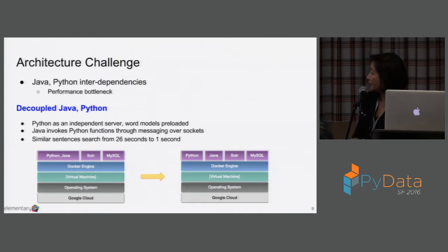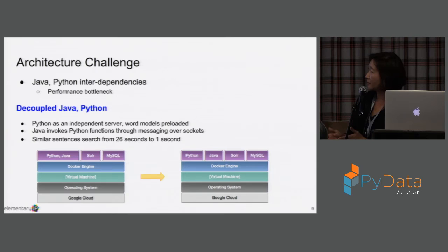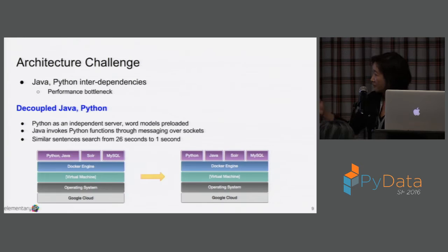What we ended up doing is breaking Python and Java apart — decoupling them. Instead of having Java call Python, which required loading Python and the word model into memory each time, we now run Python as an independent server. Python starts up with the word model already in memory and it's up and ready to go. Whenever Java needs to invoke some Python function, we just send a message over the socket to Python. We dropped our response time from 26 seconds to less than a second.